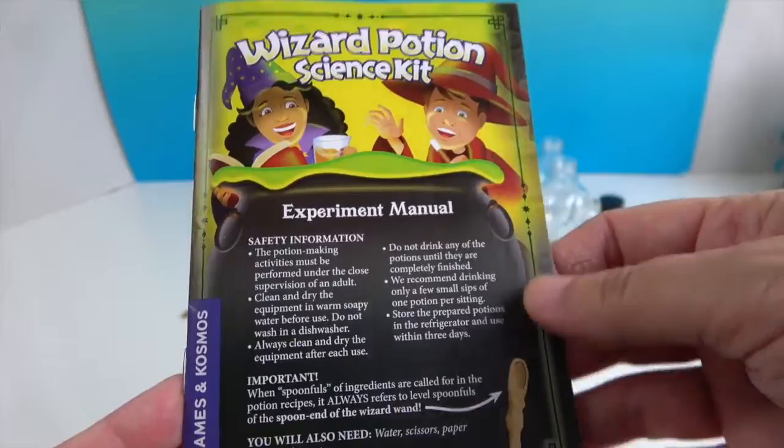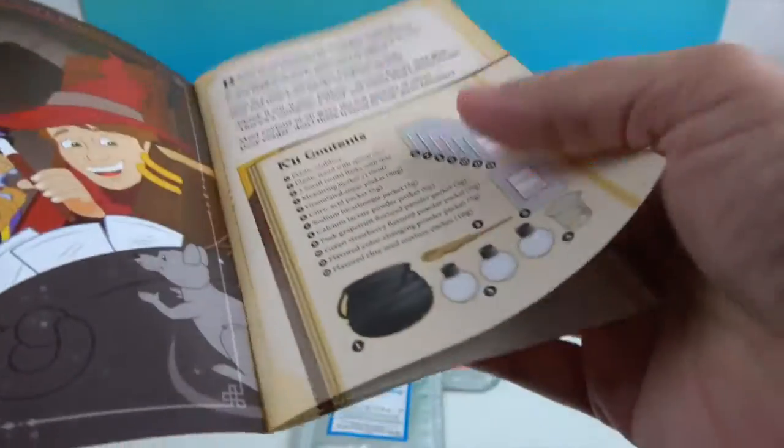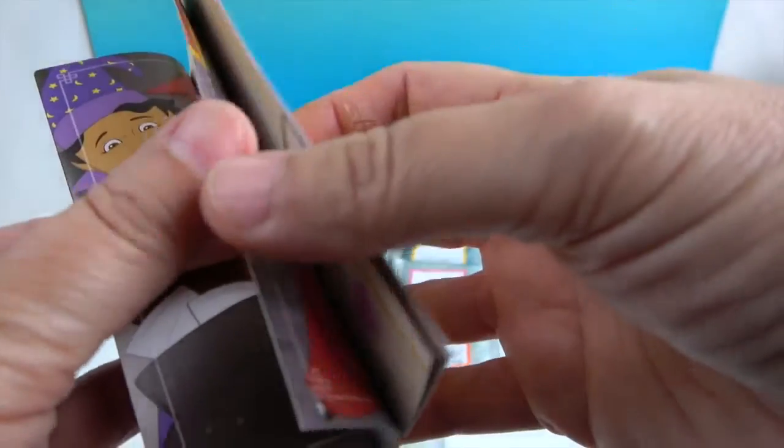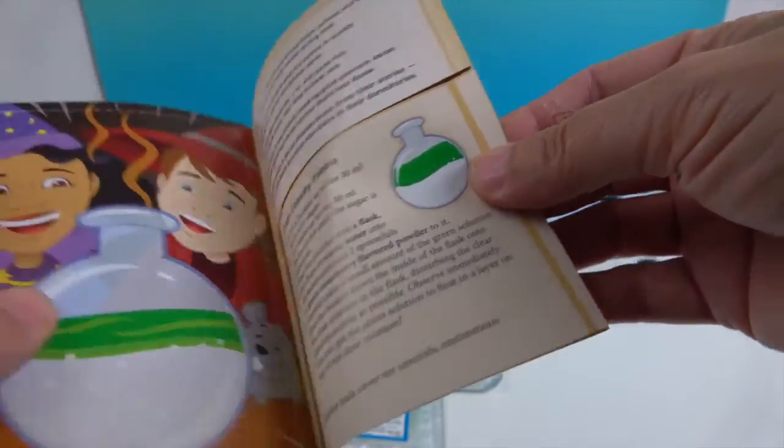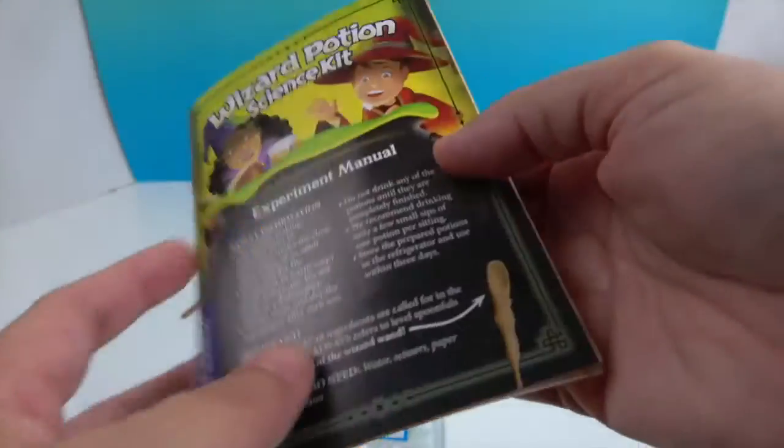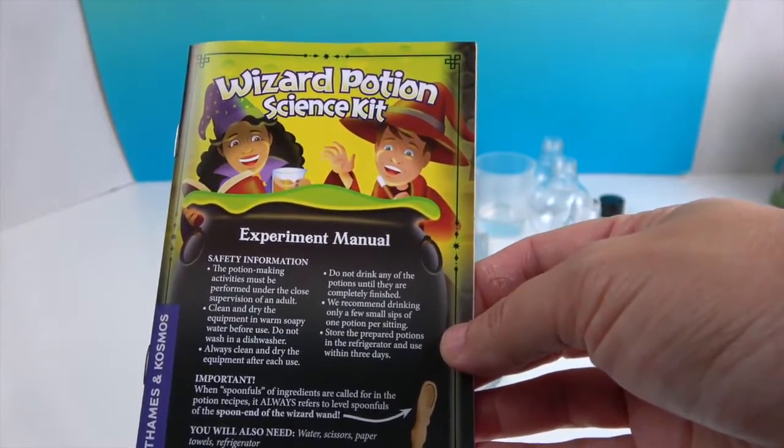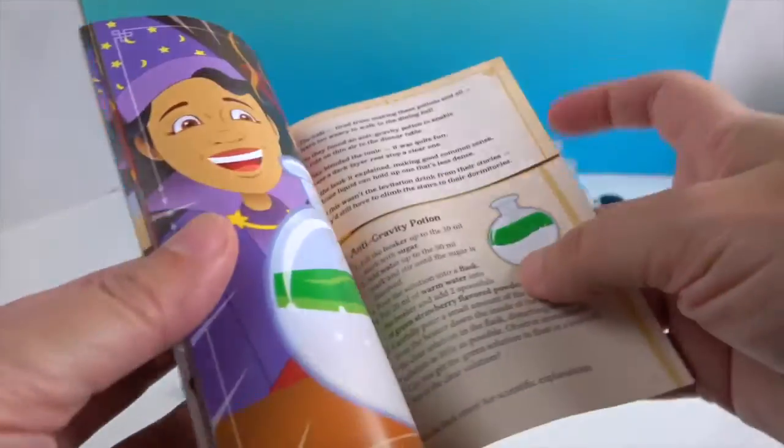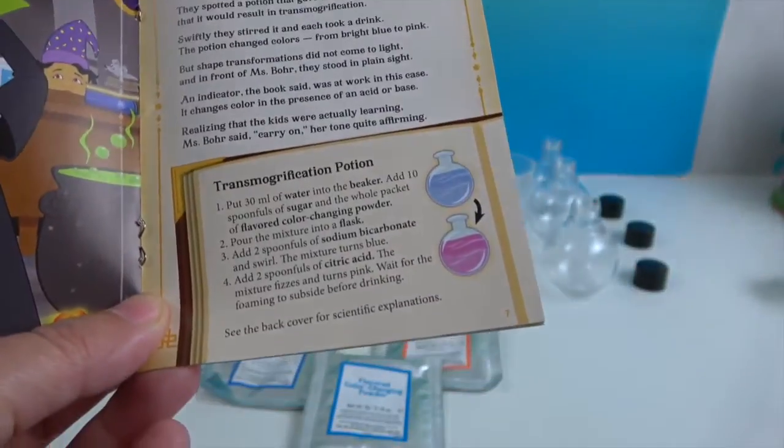They have different potions: fizzing grapefruit potion, transmogrification potion, frog's eggs potion, slime seed potion, and anti-gravity potion. We're going to pick one and we're going to get to building our potion. I think we should do the transmogrification. We're going to get together all of the things to do this potion.